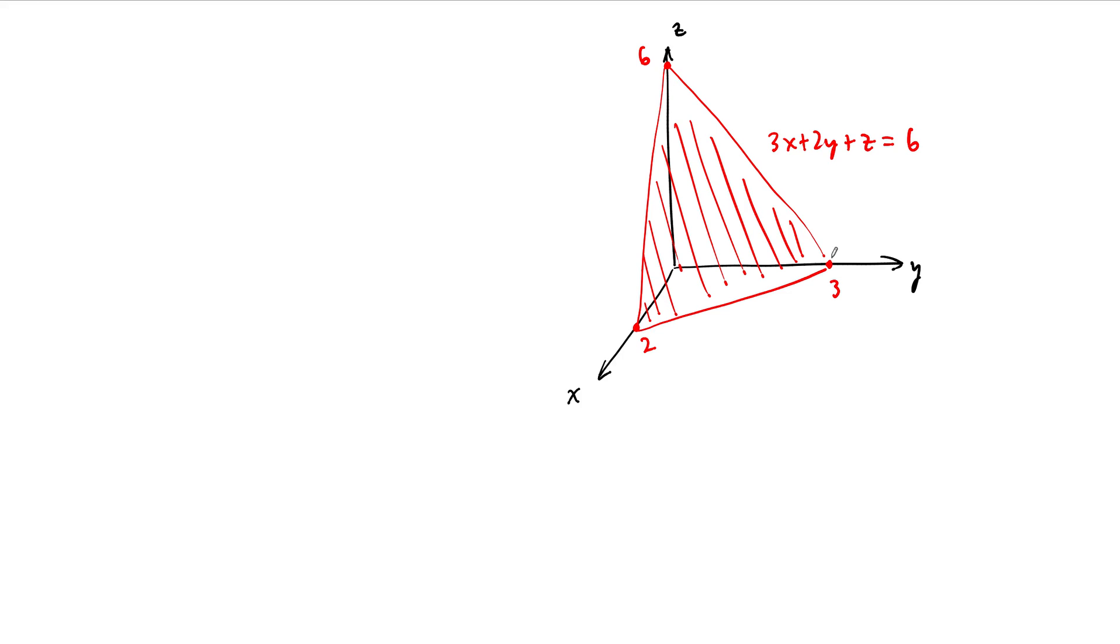In this example, we're asked to compute the surface area of the portion of the plane 3x plus 2y plus z equals 6 that lies in the first octant, or cut off by the first octant of the three-dimensional coordinate system.